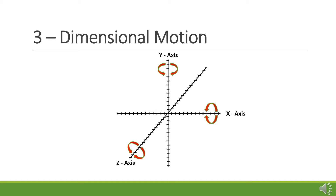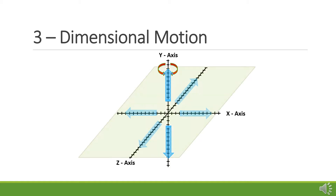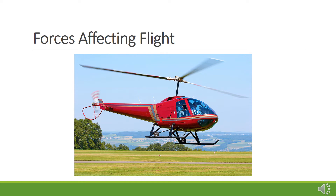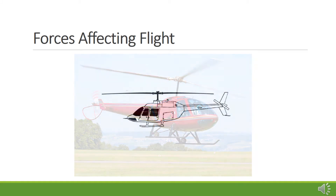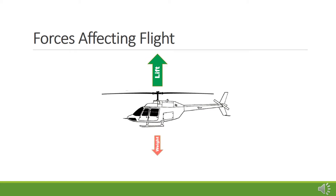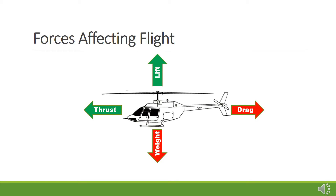It might be easier to understand helicopter controls if we look at direction of motion in addition to rotations — specifically, rotation around and motion along the Y or vertical axis, and motion within the X-Z plane. A helicopter is classified as a rotary wing aircraft; its wings rotate around a central hub. The main rotor system combines several rotary wings or rotor blades with a control system that generates aerodynamic lift to support the helicopter's weight and thrust to counteract aerodynamic drag in forward flight. Both the lifting force and the thrust are generated by the same rotating blades.